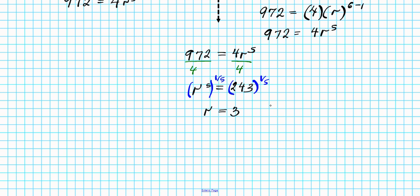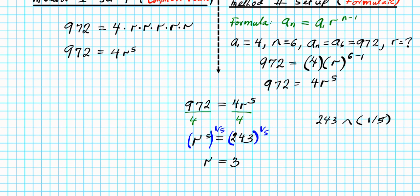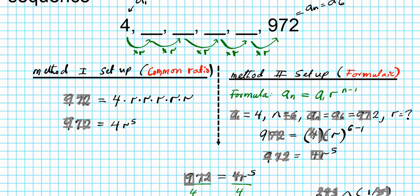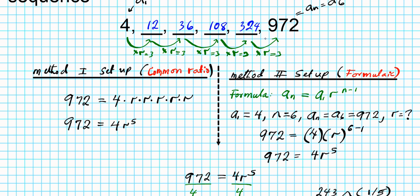To verify: raise 243 to the one-fifth power in your calculator — enter 243 caret (1 divided by 5) and you should get 3. Now we know the common ratio is 3, so we multiply by 3 repeatedly. 4 times 3 is 12; 12 times 3 is 36; 36 times 3 is 108; 108 times 3 is 324. Multiplying 324 by 3 gives 972, confirming our results. These are the missing terms of our geometric sequence.